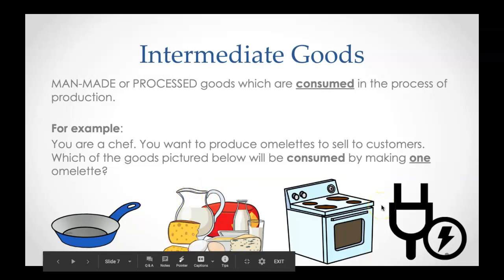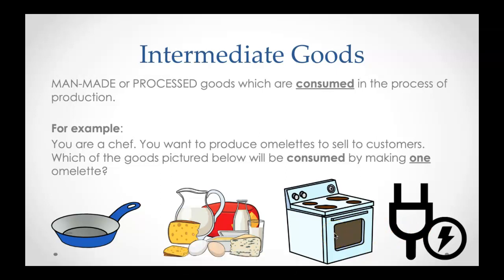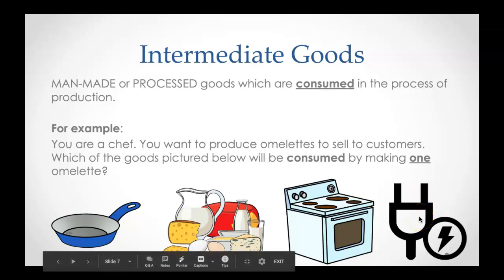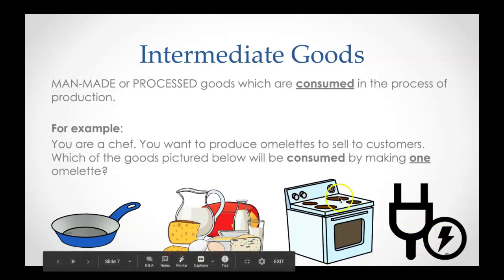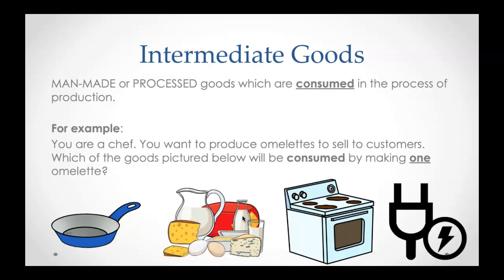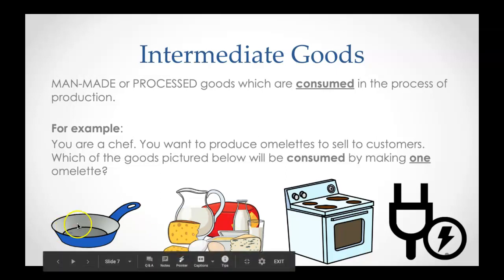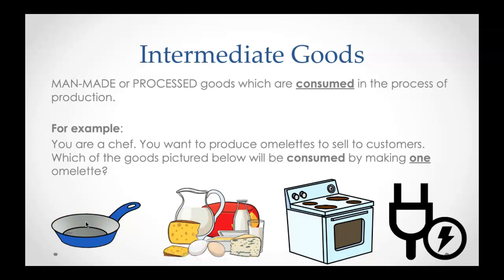Next example: while making an omelet, which will be consumed — the stove, or electricity? The electricity is what's being consumed by making one omelet, so electricity is the intermediate good. The stove is a capital good. The cheese, eggs, and milk are intermediate goods, whereas the pan is a capital good.